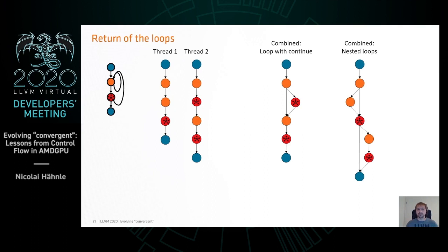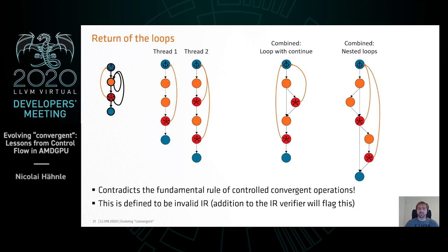If we naively put an anchor above the loop and refer to that, it causes a logical contradiction. The dynamic instance in thread one of the convergent operation refers to the same token value as the one in thread two — so those should be the same dynamic instance if the anchor is the same dynamic instance. But then those two should also be the same, which is a contradiction that's not allowed. We actually define this to be invalid IR and have code in the verifier to guard against this.